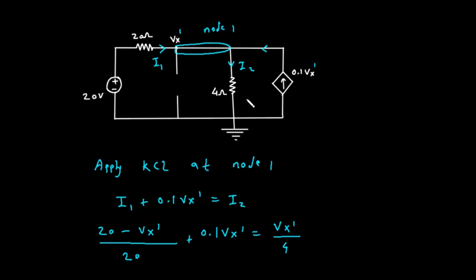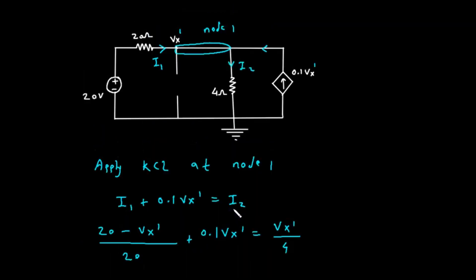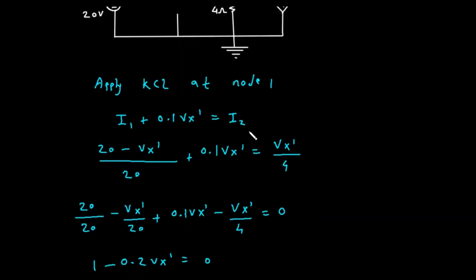We add the current from the dependent source, which is plus 0.1 Vx prime. This sum is equal to the current I2, which is the voltage Vx prime divided by the 4 ohm resistance, so I2 is Vx prime divided by 4. Our full equation is: (20 minus Vx prime) divided by 2, plus 0.1 Vx prime, equals Vx prime divided by 4.